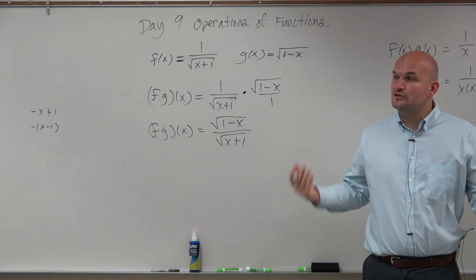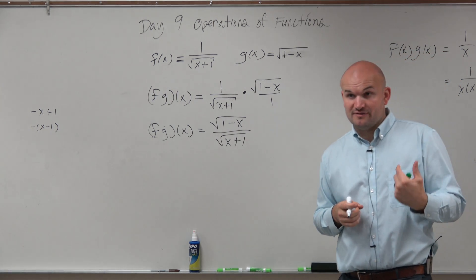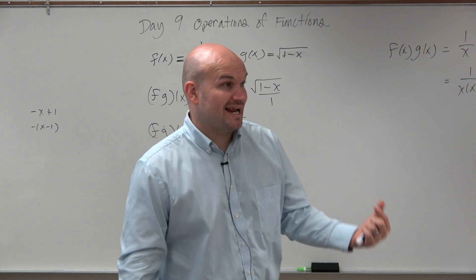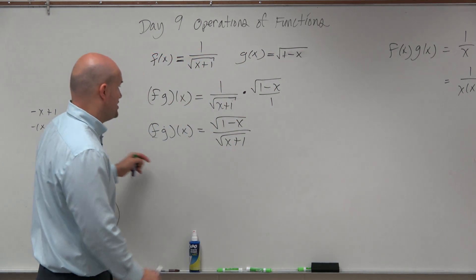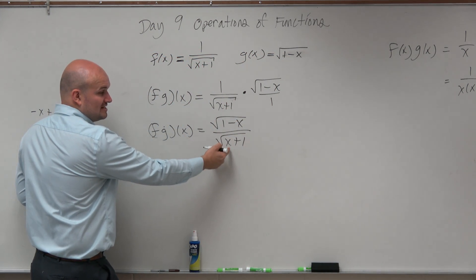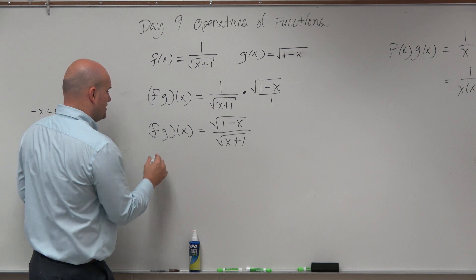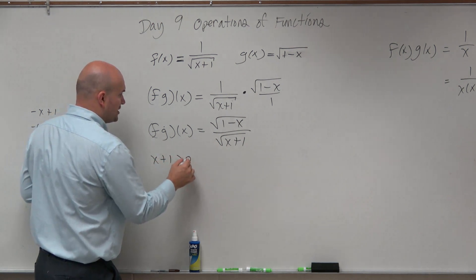Now let's find the domain. We have two different kinds of constraints. We have a radical in the denominator. In the denominator, it can't equal negative 1 because that would make it 0. So x plus 1 has to be greater than 0.